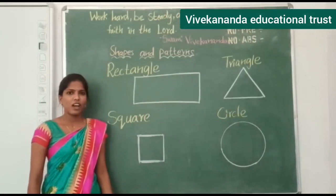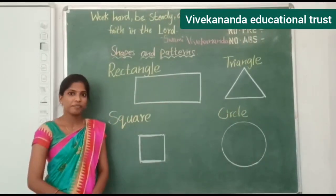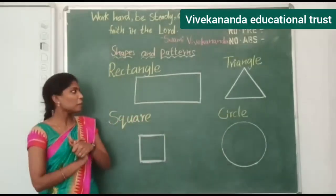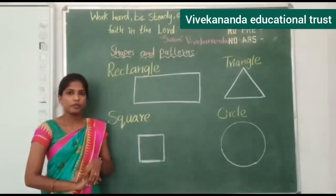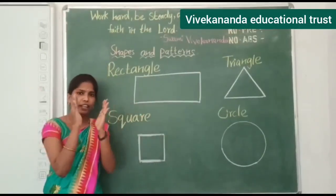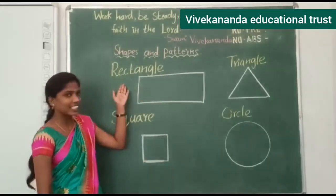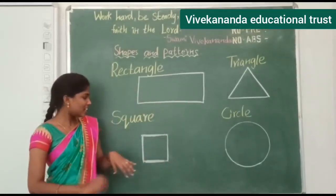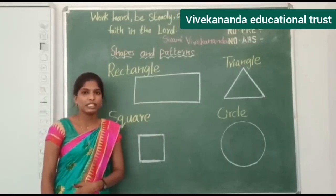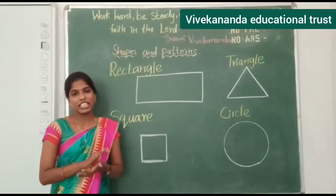Next, which shape has no corners? Circle. Excellent children. Next, which shape has two long sides and two short sides? Rectangle. Very good. Next, all sides are equal — what shape is that? Square. Very good children.